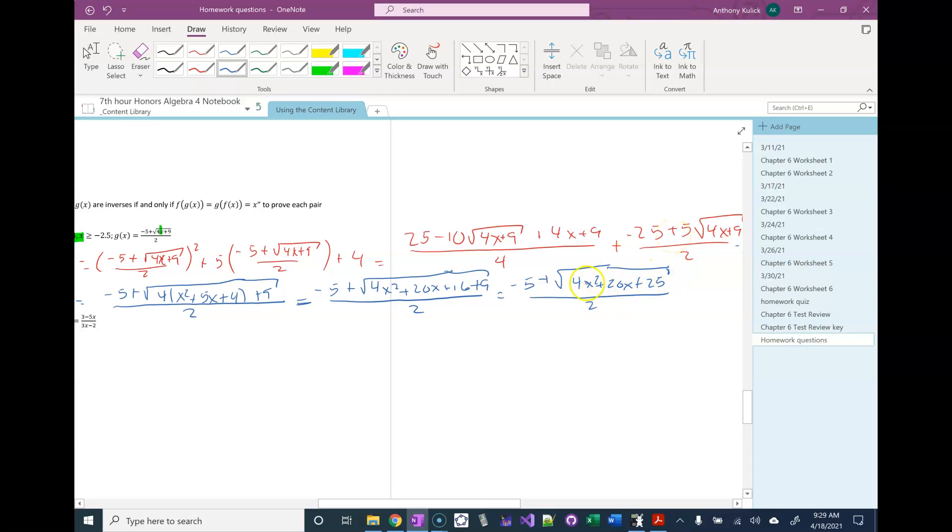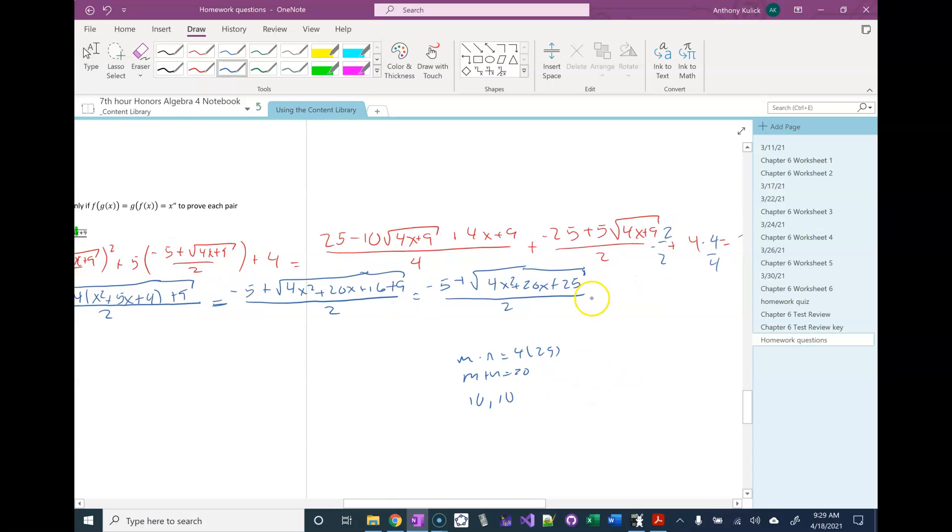I would factor this piece. So this is one where you'd have to do the long factoring. So you need to find the two numbers that multiply to give you 4 times 25, and then add to give you 20. That's going to be 10 and 10. I'm going to skip doing the long factoring from there and let you guys handle that on your own. But what you're going to end up with is 2x plus 5 times 2x plus 5. That I'm going to write as 2x plus 5 squared.